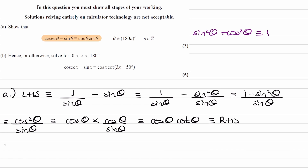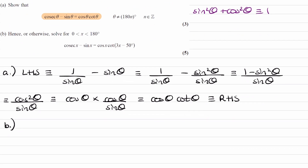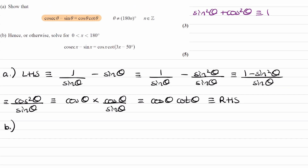Now for part B. We're trying to solve this equation. It says 'hence' as well — hence means we're using the previous information. So looking at the equation that we have over here, I think what would be best is to replace the cosec minus sine with cos cot.